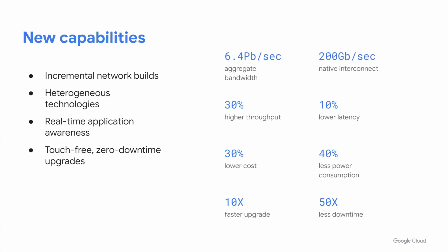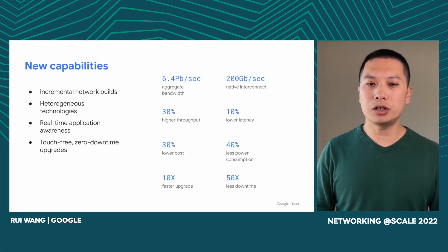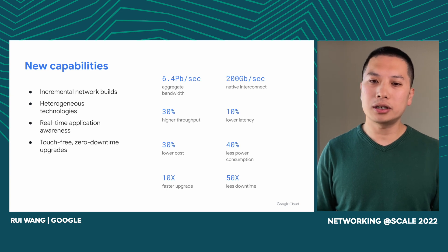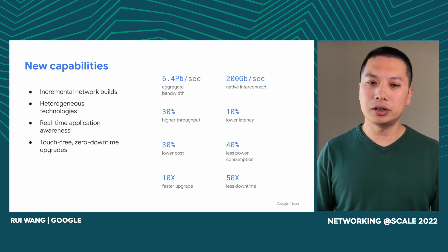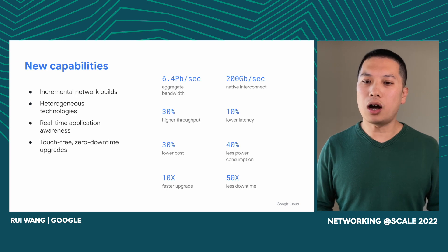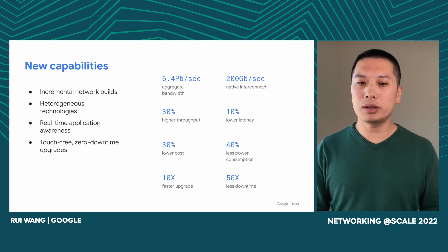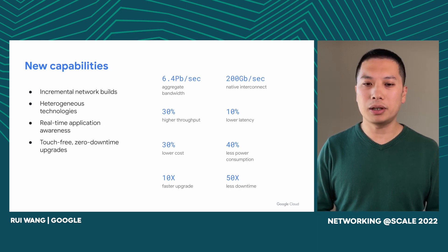Overall, this new architecture has served in production for more than five years and has enabled new capabilities: support for incremental network builds and heterogeneous technologies, a 6.4 petabit per second aggregate bandwidth with 200 gigabit per second native interconnect, higher performance, lower latency, lower cost, and lower power consumption. Jupyter reduces flow completion time by 10%, improves throughput by 30%, uses 40% less power, incurs 30% less cost, and delivers 50x less downtime than the best-known alternatives.